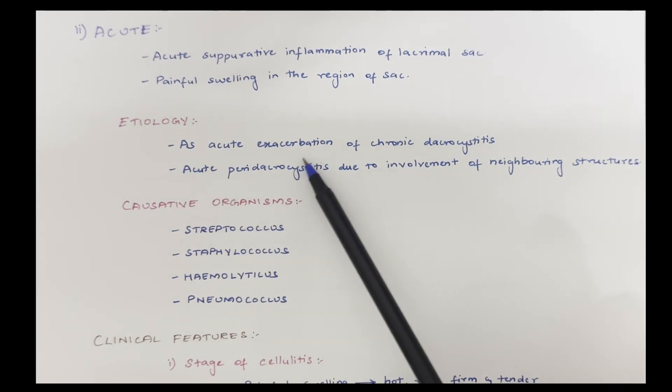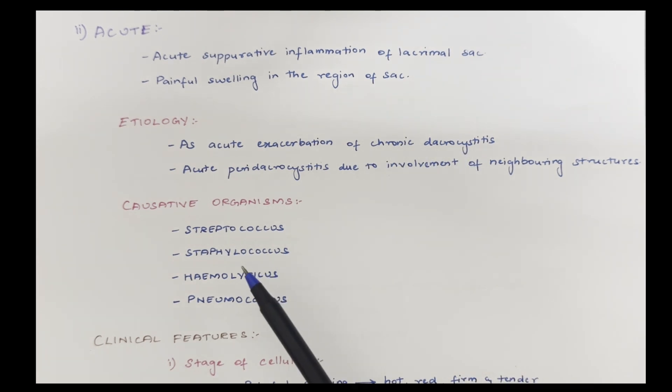Etiology: acute exacerbation of chronic dacryocystitis, acute peridacryocystitis due to involvement of neighboring structures. Causative organisms are similar to chronic dacryocystitis: streptococcus, staphylococcus, hemolyticus, pneumococcus.